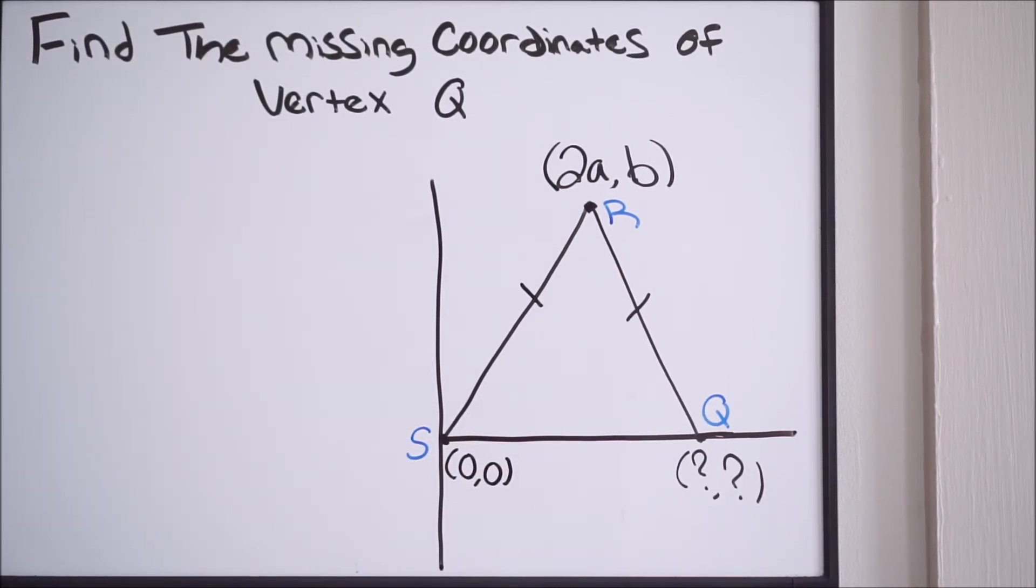If we look at vertex S, we can see that it's at the origin with coordinates (0, 0). If you look at vertex Q, you can see that the Y value is going to be unchanging because it's remaining on that X axis. So the Y value for vertex Q is also going to be 0.